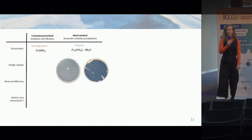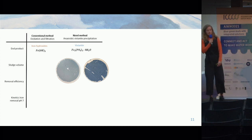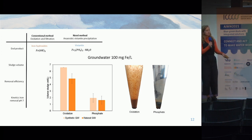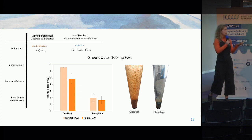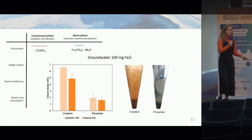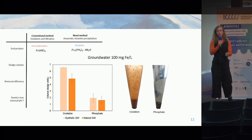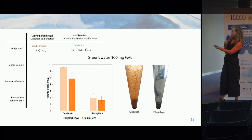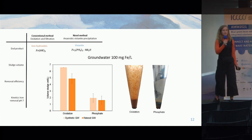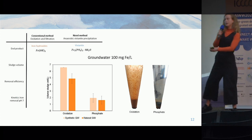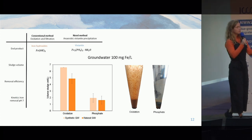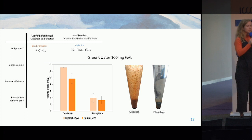Perhaps the most interesting result is the sludge volume. By anaerobic precipitation, two-thirds less sludge was formed compared to the conventional treatments — both in synthetic groundwater and in the natural groundwater. You can also see in the picture that the settability of the sludge is actually much better.